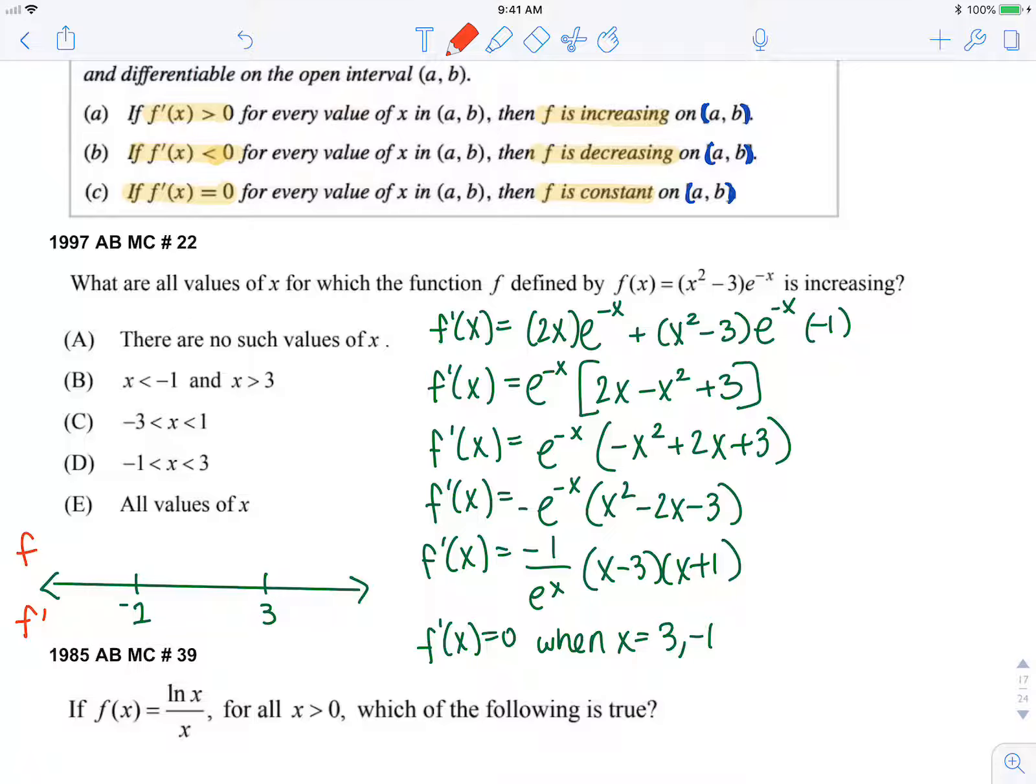If I'm checking a value here, I could say let x equals 0. If I plug in 0 into this derivative function, I get a negative multiplied by a negative multiplied by a positive. So that's going to be a positive, which means it's increasing in that interval.